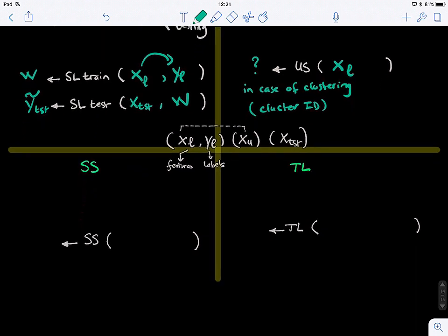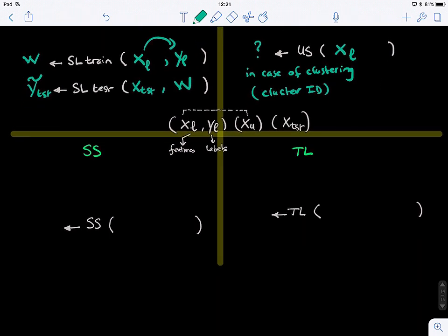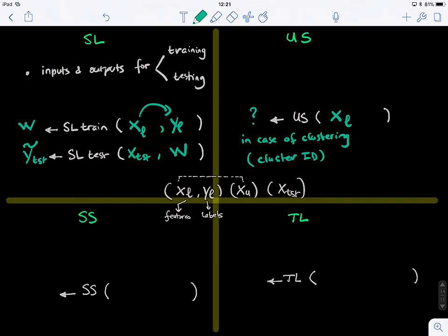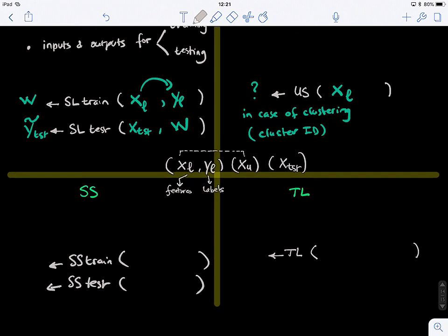Now for semi-supervised learning, what are we giving for the training? I should write this properly. So we have SS-train and we have SS-test. So you guys tell me, for training semi-supervised learning, what do we give it? Labeled and also their corresponding labels and the unlabeled data. Very good. And then what do we get? We learn a model here, similar. Another model. So let's call this supervised and this is SS.